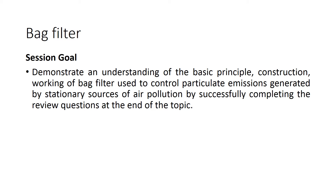In the last session, we started with Air Pollution Control Equipments. The Cyclone Separator is the most widely used air pollution control equipment in industries for various applications. Particle sizes of 5 to 25 microns can be collected using a Cyclone Separator. We discussed its principal construction and working, along with the parameters which affect cyclone efficiency, its advantages, limitations, and applications.